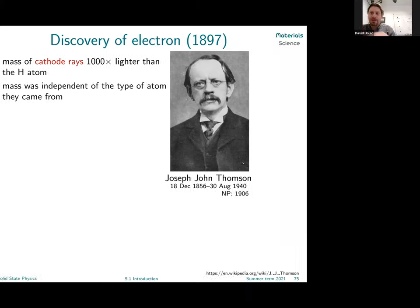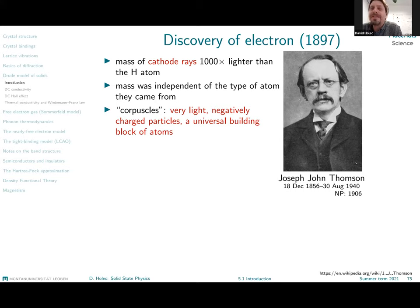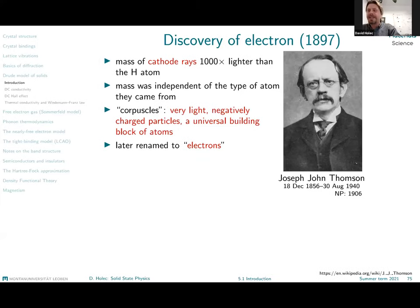Thomson also figured out that the corpuscles carry charge, because he was able to direct the direction of propagation using an external electric field. He proposed these new fundamental particles — fundamental in the sense that they were smaller than atoms — as corpuscles: very light, negatively charged, and universal. Independent of the type of cathode he used, he was always observing the same corpuscles forming the cathode rays. This marks the discovery of the electron in 1897 by J.J. Thomson, who was awarded the Nobel Prize in Physics in 1906.